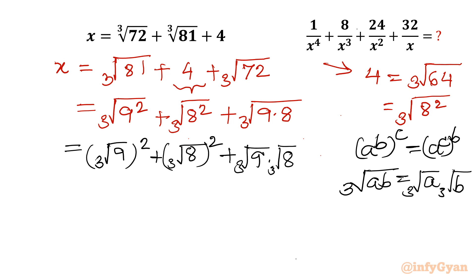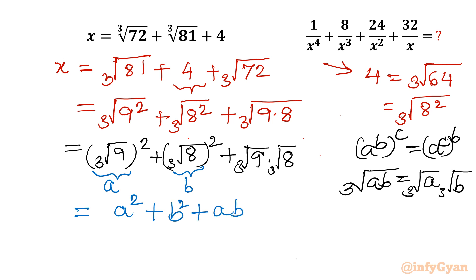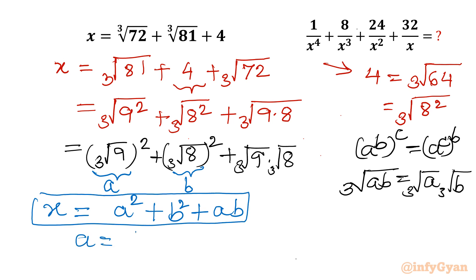Now you can see easily: if we let a = cube root of 9 and b = cube root of 8, then this expression takes the form a² + ab + b². This is our x. Note that b = cube root of 8 = 2, since cube root of 8 equals 2 (as 8 = 2³). We will apply this value at the last step.